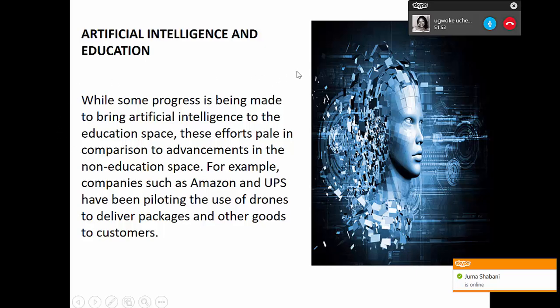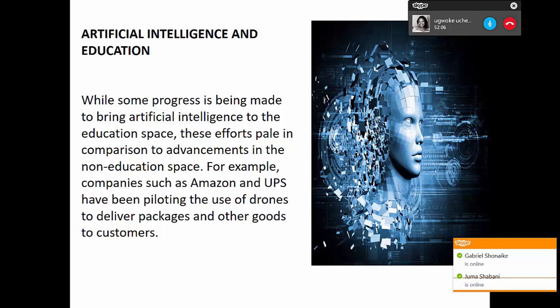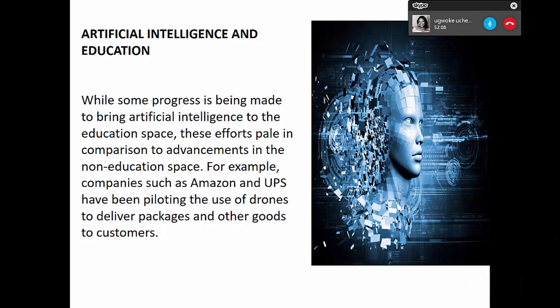On slide 3, linking artificial intelligence and education: when we look at AI in other spheres outside education, great progress has been made. But in education, it is not as fast as in other spheres. As a computer teacher, I know the challenges in education. When I think of what AI can do for me as a teacher, it seems pale compared to what AI has done in other spheres — for example, Amazon and UPS using drones to deliver packages.